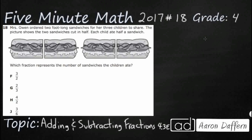So we have Mrs. Owen and she's ordering these two foot-long sandwiches, which we've got right here, for her three children to share — and that's going to be a key piece of information for us. The picture shows these two sandwiches; they're each cut in half, so we've got two six-inch pieces for each sandwich. Each child ate half a sandwich. There's not a single digit in this entire word problem — you have to read key words like 'three children,' 'two sandwiches cut in half,' and 'half a sandwich for each child.'